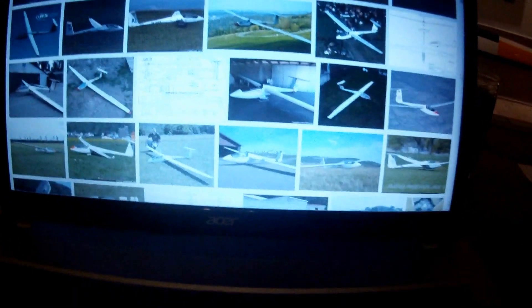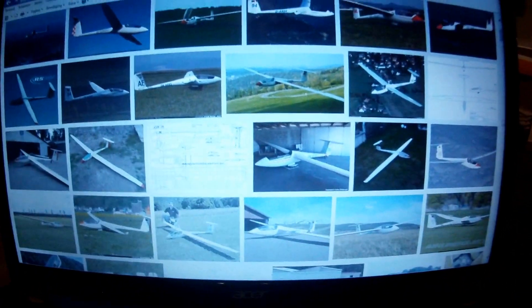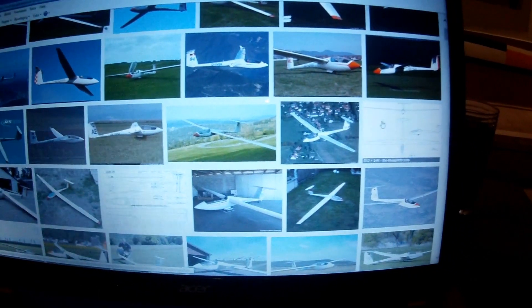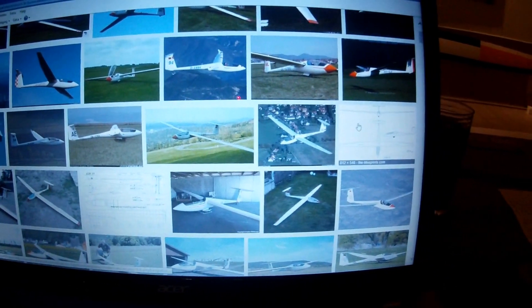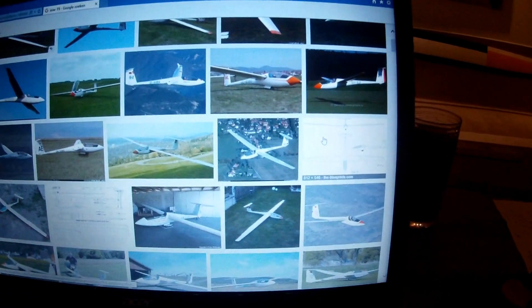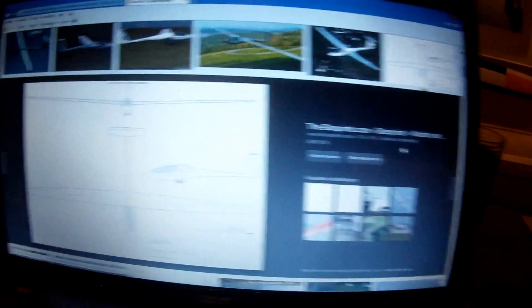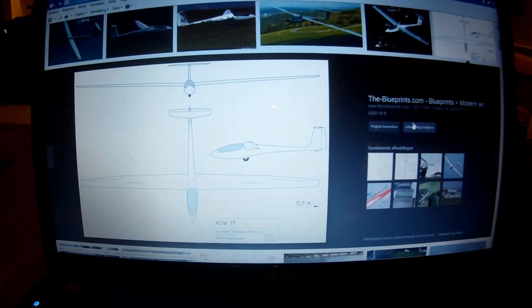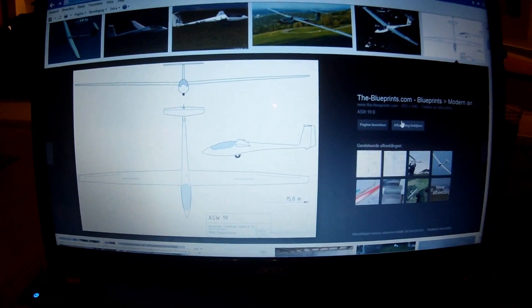First you want to choose what type of airplane you want to build, so of course we use Google. I already found one, and you're going to look at a drawing like this. Here you got it, a drawing of the ASW 19.